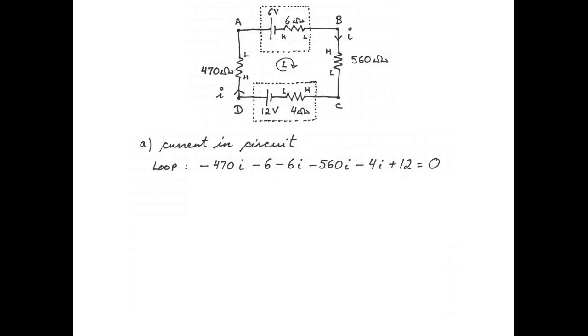The first voltage we come across is the voltage across the 470 ohm resistor, which is 470 multiplied by I. That voltage is negative because we're going from high potential to low potential. Then we go from high to low across the 6 volt EMF, so that's minus 6, from high to low over the internal resistance of the battery minus 6I, then minus 560 times I, minus 4I in the internal resistance of the 12 volt battery. And across the 12 volt battery, we go from low potential to high potential, so plus 12. When we simplify this equation, we get minus 1040I plus 6 equals zero, which means that I is equal to 6 over 1040. And that is 5.77 milliampere.